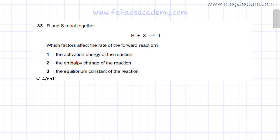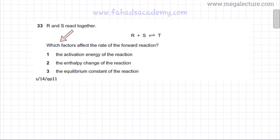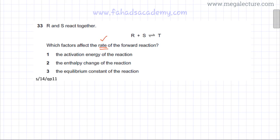The following question states that R and S react together with an equilibrium reaction given, and asks which factors affect the rate of the forward reaction. Remember that the question is about rate, not about equilibrium — never confuse the two terms. We are talking about rate only.